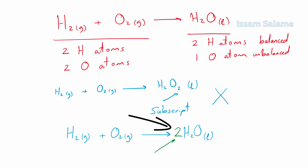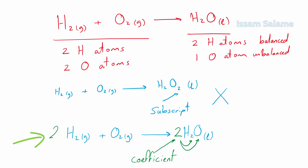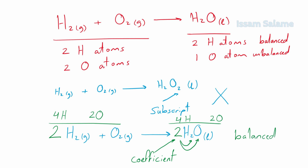The only way to balance atoms is by multiplying them by a coefficient. Here, I multiplied the water molecule on the right side by 2. This coefficient multiplies both the hydrogen atoms and the oxygen atoms, giving us four hydrogen atoms and two oxygen atoms on the right side. We then balance the hydrogen on the left side by multiplying it by 2. Now both sides have four hydrogen atoms and two oxygen atoms, and the equation is balanced.